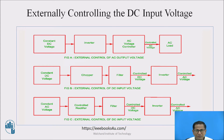Refer to figure B. For obtaining controlled DC voltage, vary the duty cycle of the chopper. As the duty cycle of the chopper changes, the output voltage changes accordingly, and in this way controlled DC is possible.